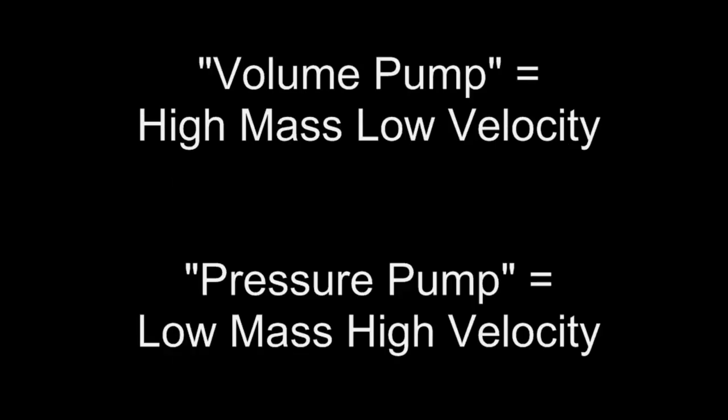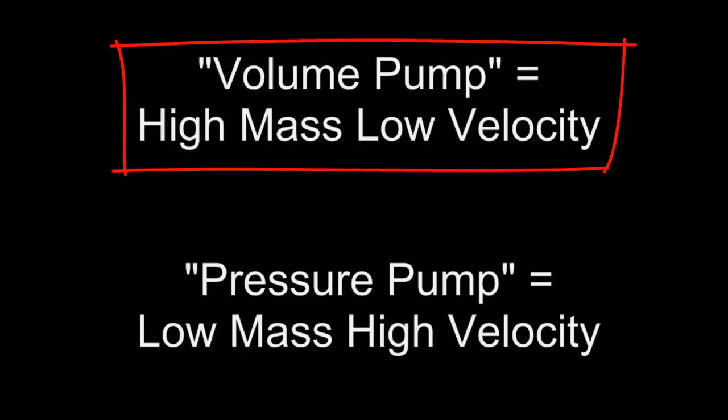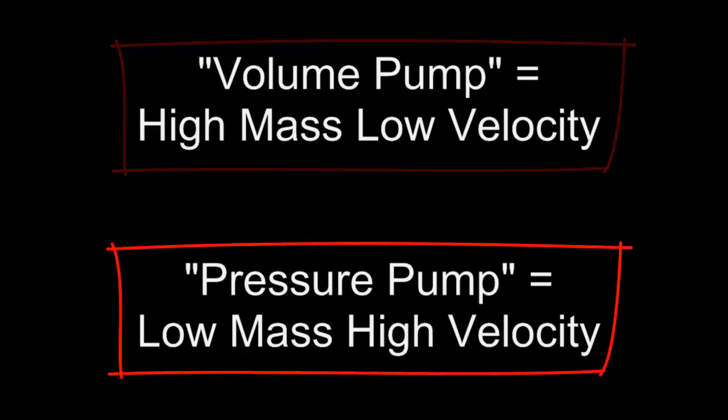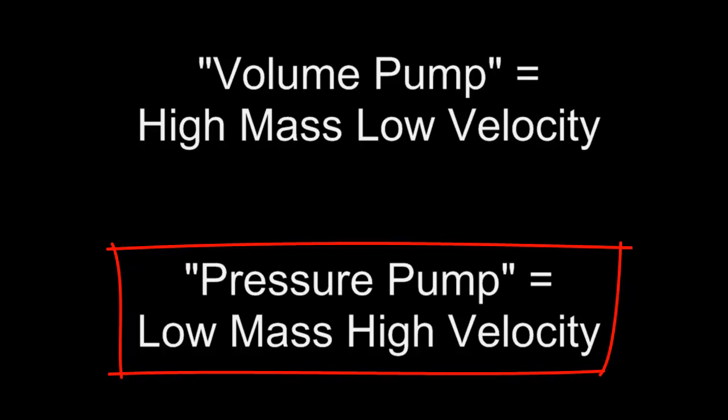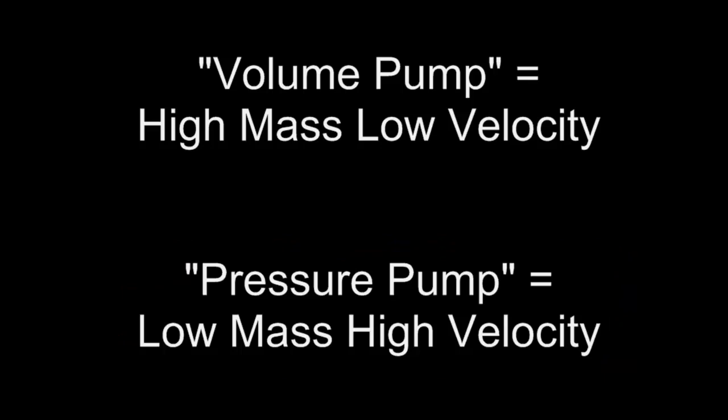Relative to common jet-boater lexicon, someone may ask: what's the difference between this and that pump? The answer may be that this pump is a volume pump and that pump is a pressure pump — but this doesn't really answer the question. A volume pump is basically high mass at low velocity, and a pressure pump is low mass at high velocity. So a volume pump is more like a Hamilton 212 and similar, and a pressure pump is more like a Berkeley and similar. The volume pump is more efficient at low speed operation, and the pressure pump, though less efficient, will get you to a higher top speed.